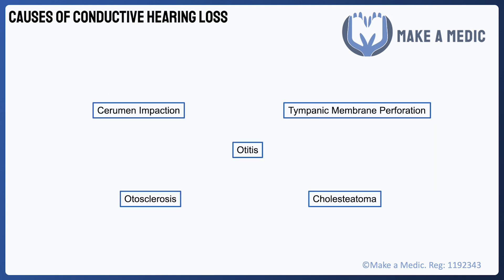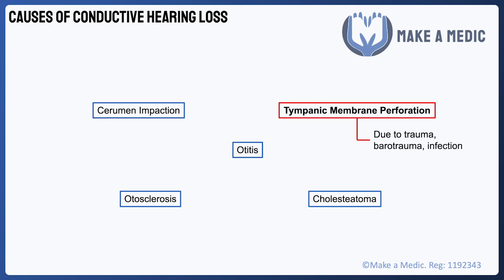Some of the causes of conductive hearing loss are obvious. The technical term for earwax is cerumen, and it can become impacted in the ear canal, obstructing the passage of sound. The eardrum can become perforated, most commonly due to trauma, barotrauma, or infection, and this will prevent sound from being transmitted to the middle ear effectively.